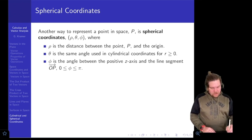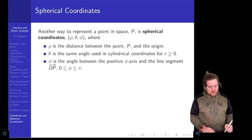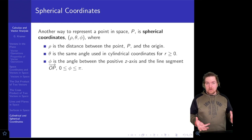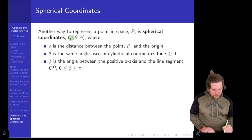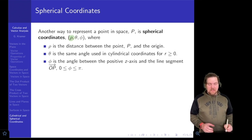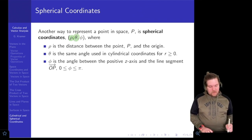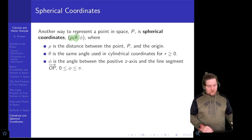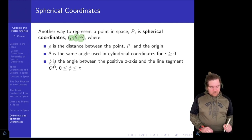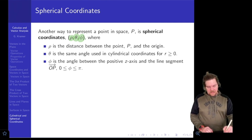In spherical coordinates we can represent a point in a three-dimensional coordinate system using three different coordinates. Rho represents the distance from the origin to the point — that's different from R in cylindrical coordinates. Theta is the same angle used in cylindrical and polar coordinates. And phi is a third angle measured off of the positive z-axis.